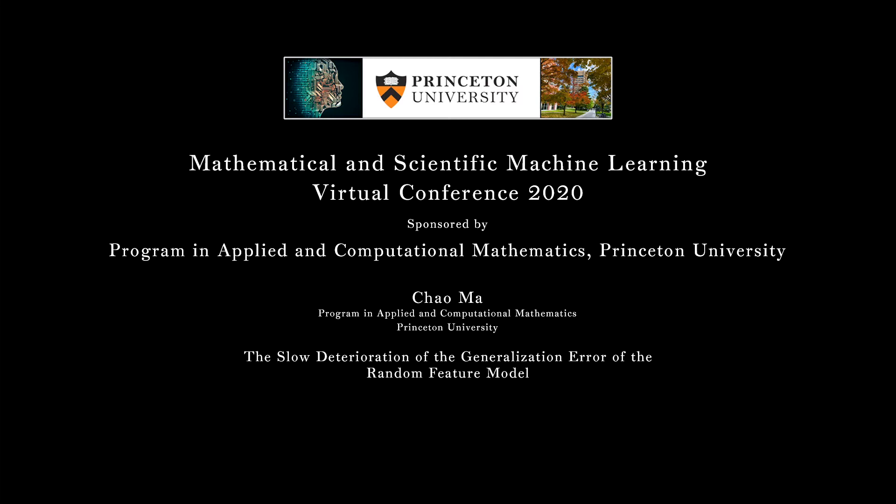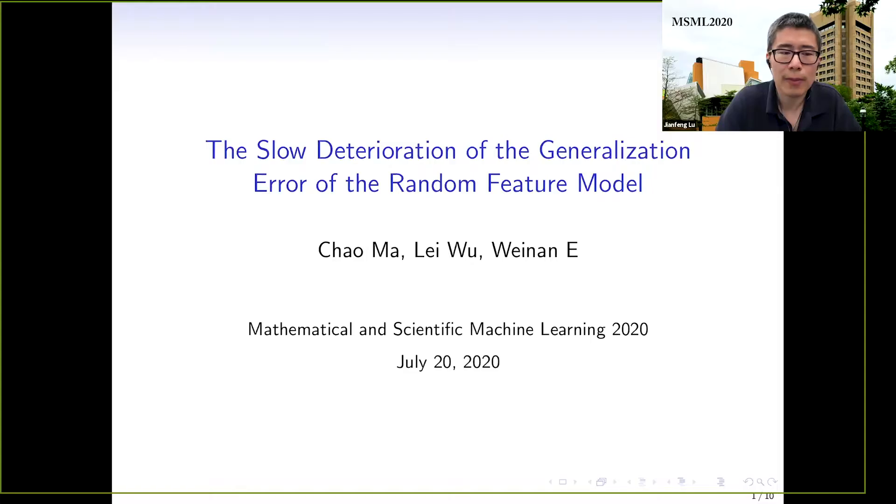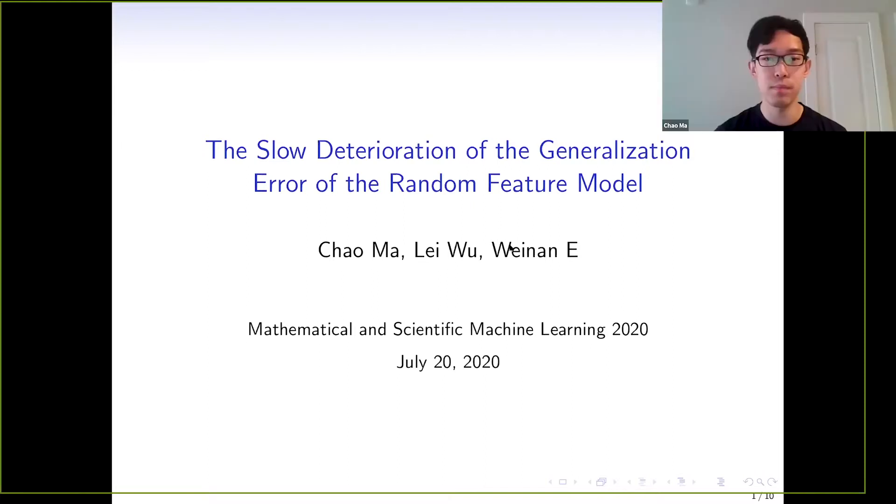Today, the first accepted talk presentation is going to be given by Chao Ma from Princeton University. So without further ado, Chao, please start. Okay, thank you. Today, I will talk about the slow deterioration of the generalization error of random feature models.